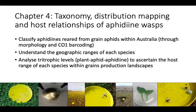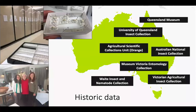Moving on to Chapter 3: the taxonomy, distribution mapping and host relationships of aphidine wasps. For this chapter I wanted to classify aphidines reared from grain aphids within Australia through a combination of morphological identification and barcoding, understand the geographic range of each species, and analyze tritrophic levels — plant host to aphid host to aphidine — to ascertain the host range of each species within grain production landscapes. As a reminder, aphidines are one of the types of primary parasitoids parasitizing aphids.